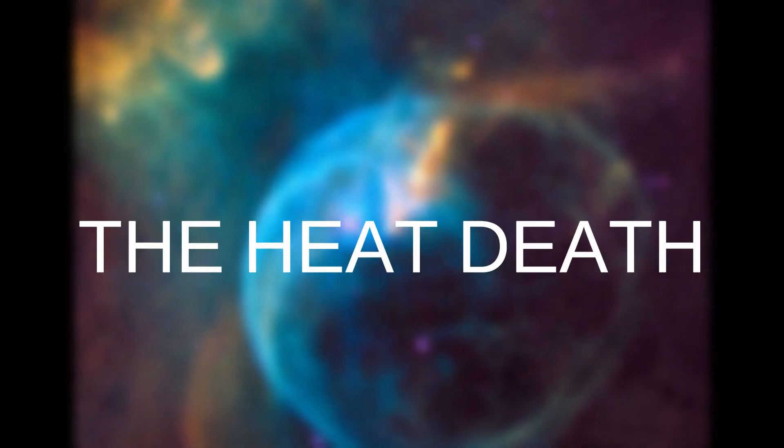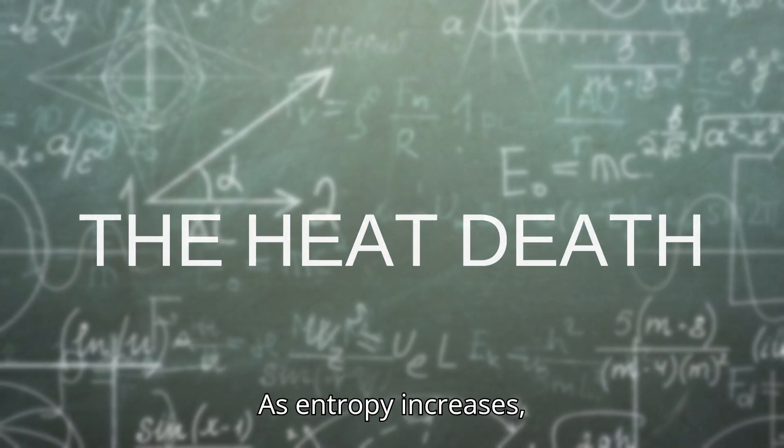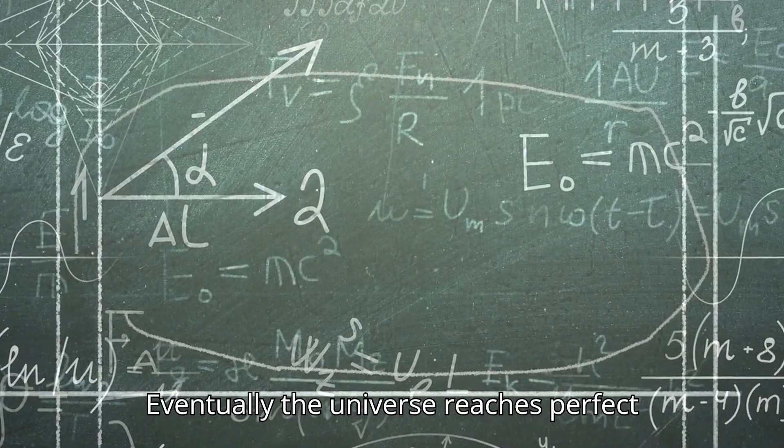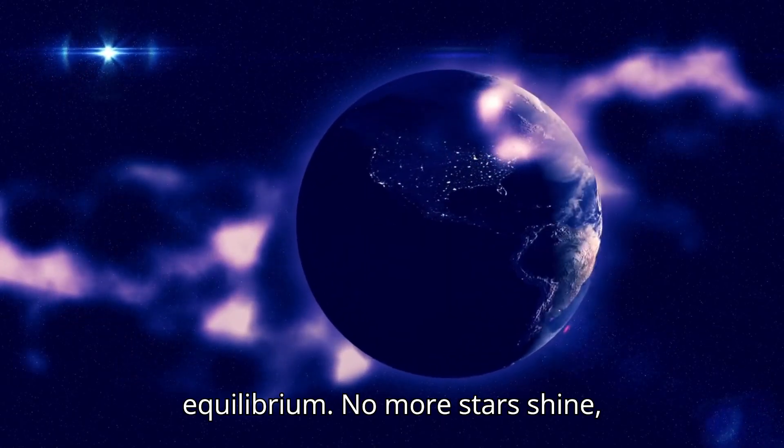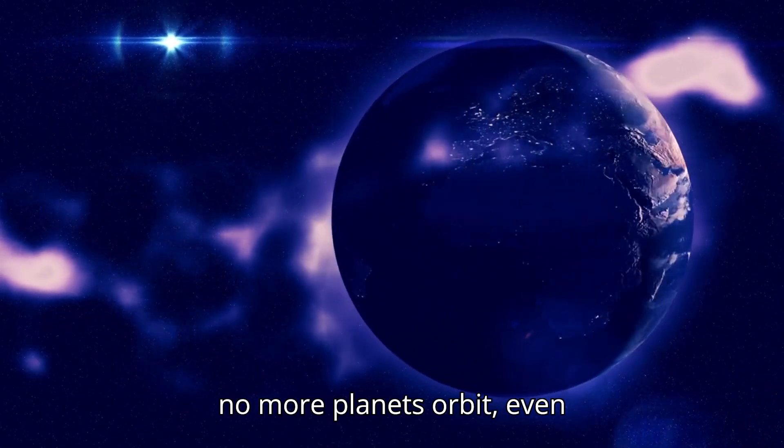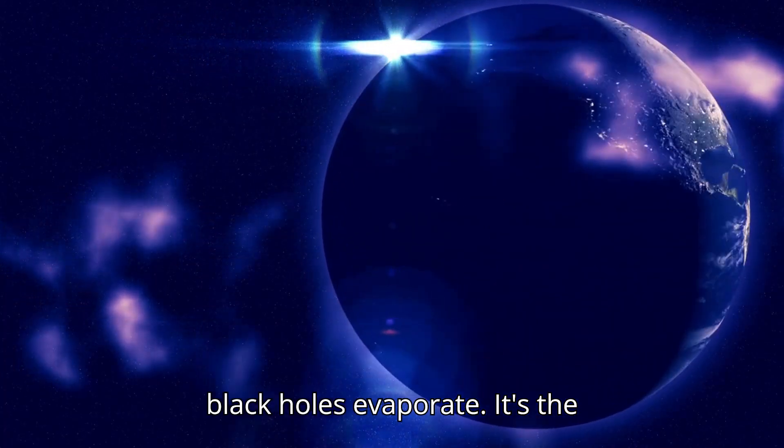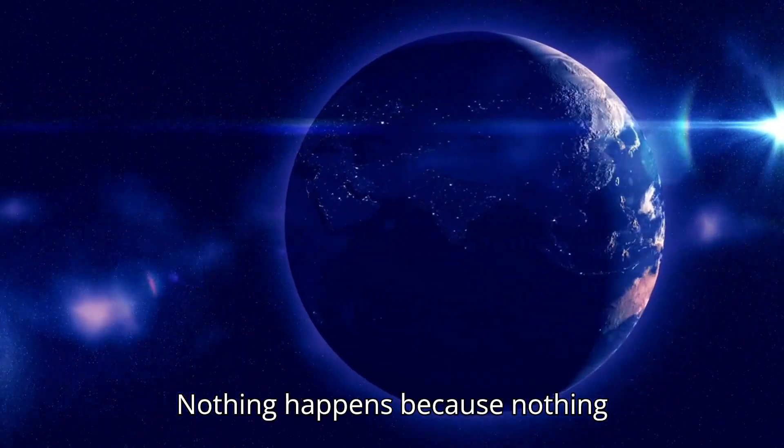The Heat Death. As entropy increases, usable energy decreases. Eventually the universe reaches perfect equilibrium. No more stars shine, no more planets orbit. Even black holes evaporate. It's the ultimate cosmic retirement: nothing happens because nothing can happen anymore.